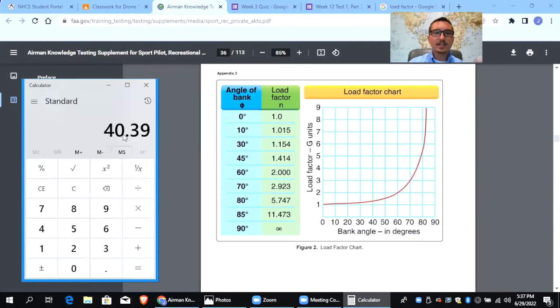And then you're going to need your aircraft to be able to support 40.39 or 40.4 pounds of weight in order to make a 30 degree bank turn. Like that's it. It's that easy. These questions are actually really easy. They look complicated, but they're not.